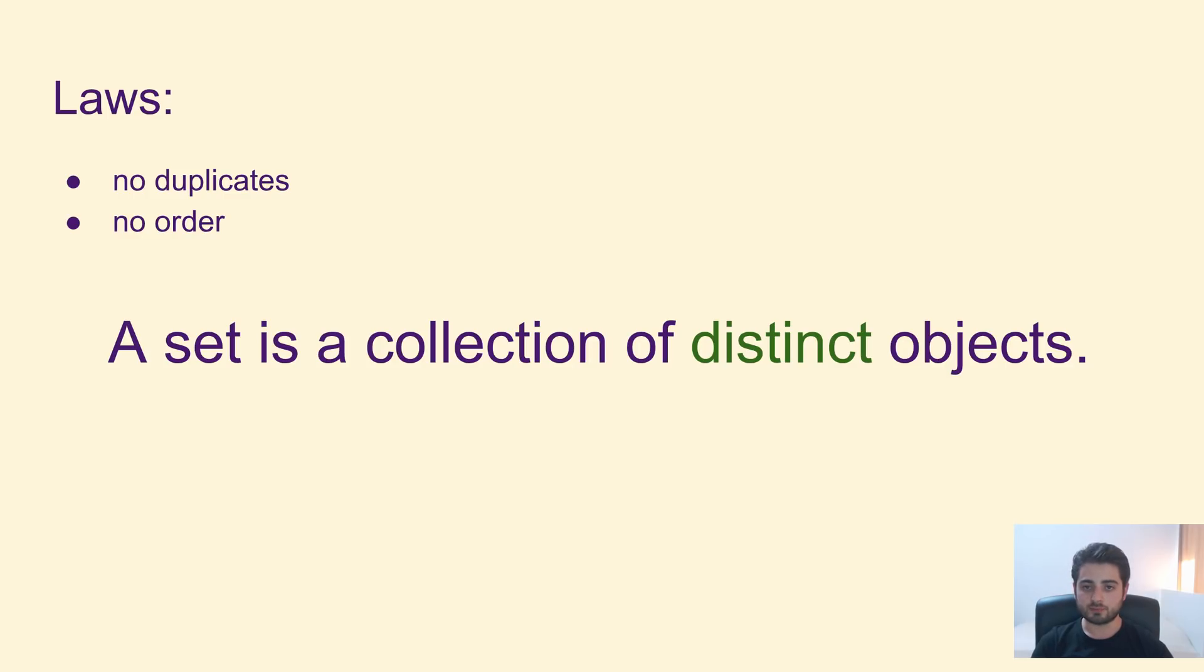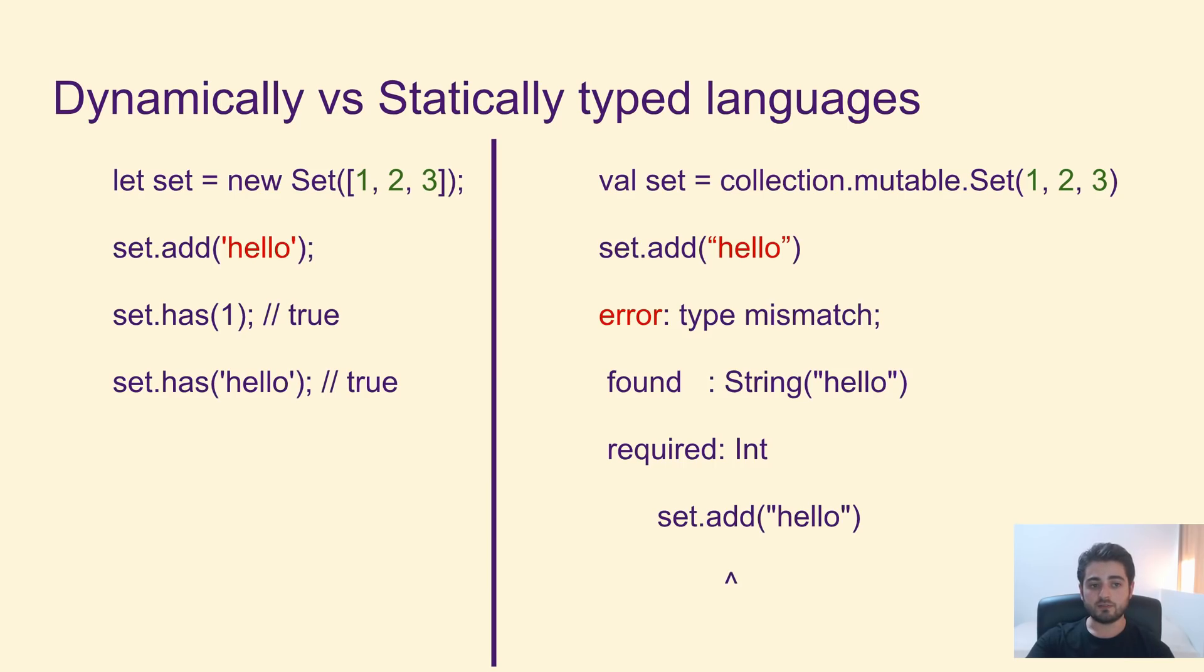All right, so all the information presented so far is agnostic of programming languages. Sets are a very mathematical construct, and if you're using a library that violates either of these two laws, I would highly suggest to stop using this library. I'm usually open-minded in my videos, but this is pretty much where I draw the line. What can differ is the following. If you are in a dynamic language, it might allow you to put different kinds of elements into the same set. For example, this is JavaScript, and we're creating a set of integers. There's one, two, three, and then all of a sudden we're adding another element, but this element is not an integer, it's a string. And you're asking the set if it contains this element, and sure, it contains both of them.